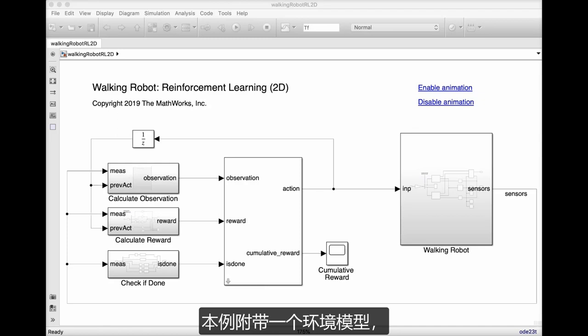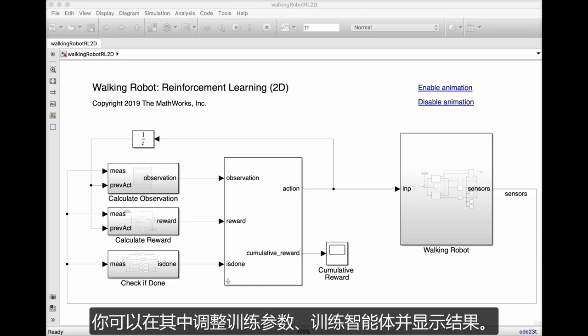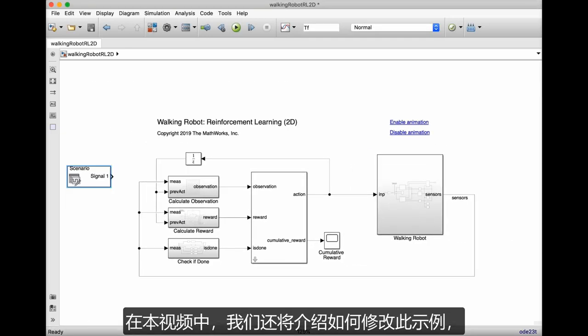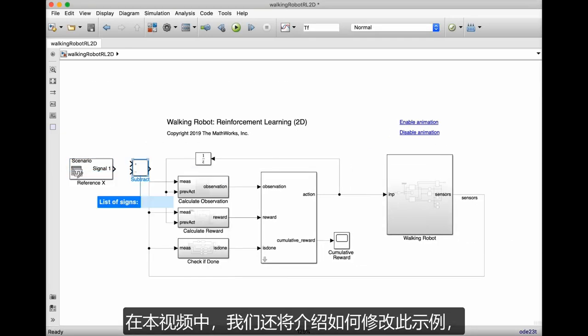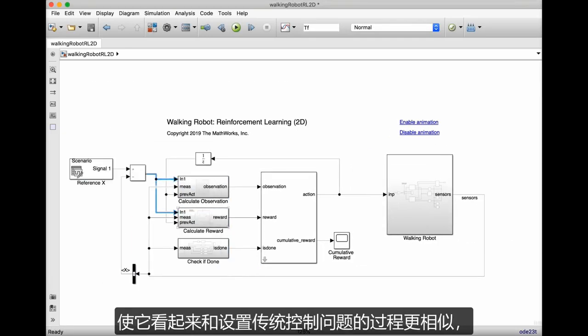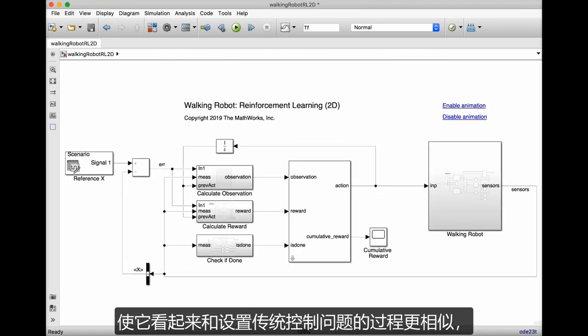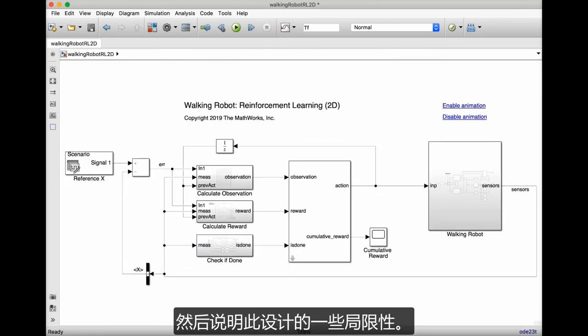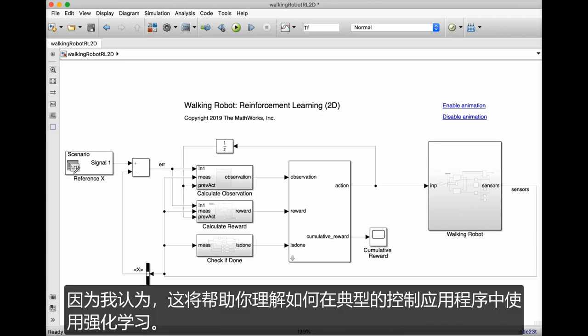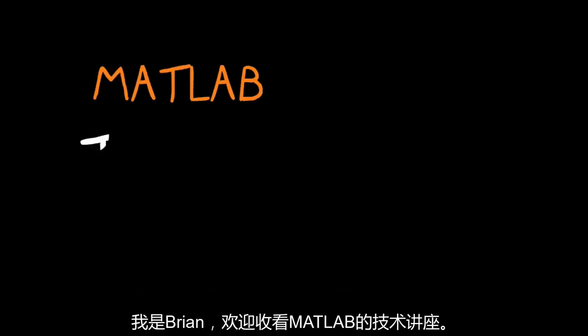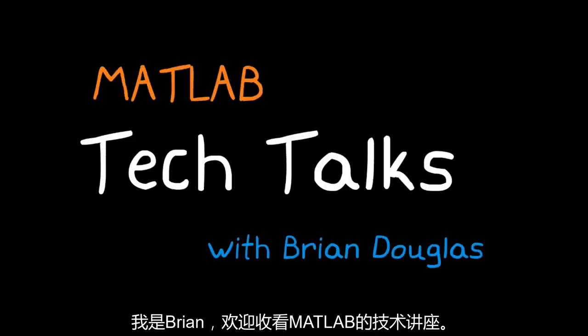This example comes with an environment model where you can adjust training parameters, train an agent, and visualize the results. And in this video we're also going to look at how we can modify this example to make it look more like how we would set up a traditional controls problem and then show some of the limitations of the design. So I hope you stick around for this because I think it'll help you understand how to use reinforcement learning for typical control applications. I'm Brian and welcome to a MATLAB Tech Talk.